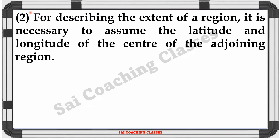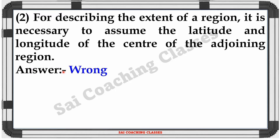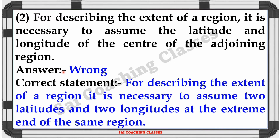Statement 2: For describing the extent of a region, it is necessary to assume the latitude and longitude of the center of the adjoining region. — Answer: Wrong. Correct statement: For describing the extent of a region, it is necessary to ensure two latitudes and two longitudes at the extreme ends of the same region.